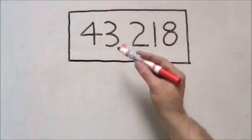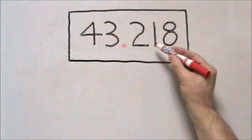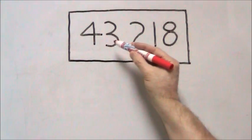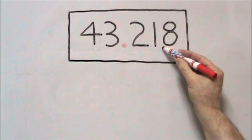On the board is the number 43.218, or 43 and 218 thousandths.